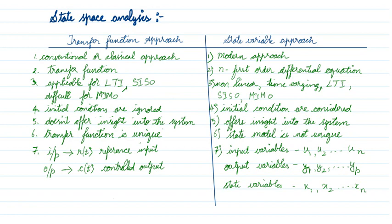The transfer function approach does not offer insight into the system — it cannot tell us about controllability or observability of the system, which we will see in the next lecture. But the state variable approach offers insight into what is inside the system and how it is working. Importantly, the transfer function of any system is unique, but the state model is not unique — for a given system, you can have many different state models.